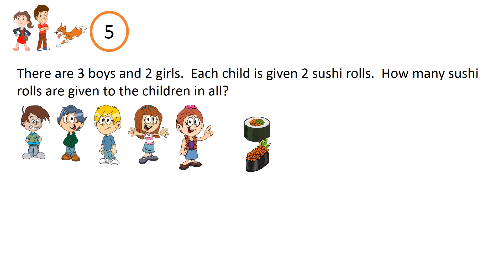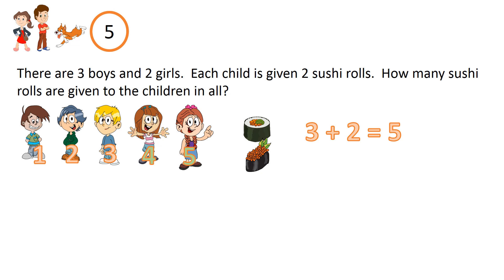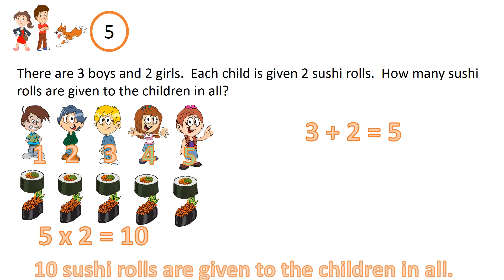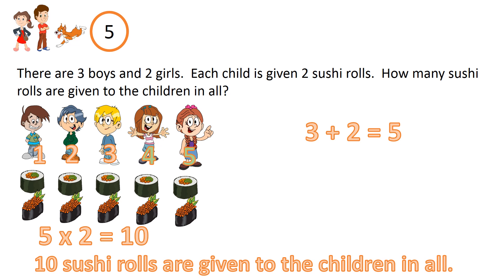Question 5. There are three boys and two girls. Each child is given two Sushi Rolls. How many Sushi Rolls are given to the children in all? First we need to find out how many children there are. There are three boys and two girls, so we do the addition first. Three plus two equals five — there are five children all together. Now we need to find out how many Sushi Rolls are given. Five groups of two, as we have five children in all and each receives two rolls. Five times two equals ten. Ten Sushi Rolls are given to the children in all.